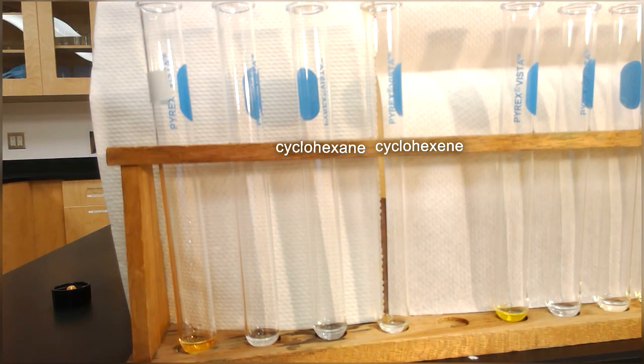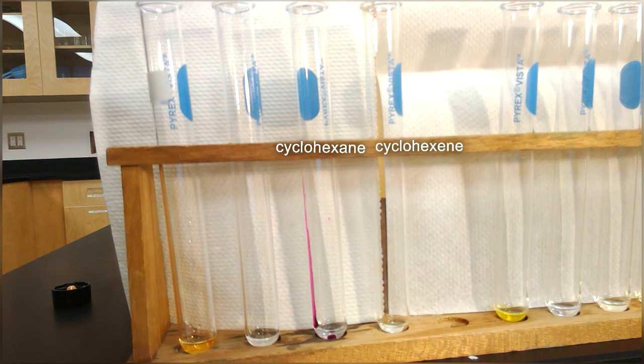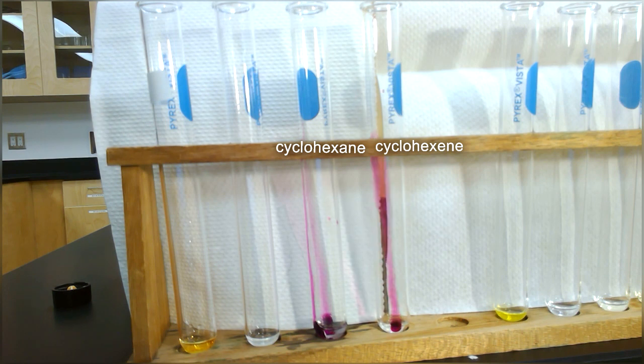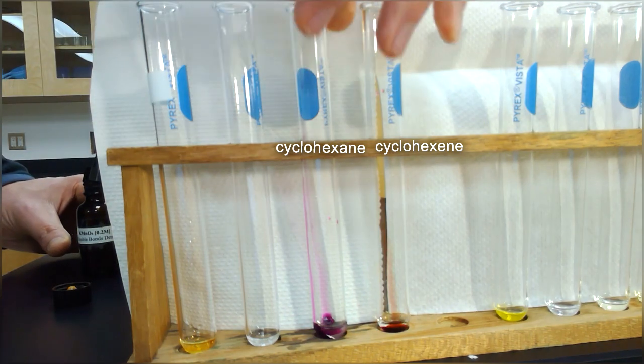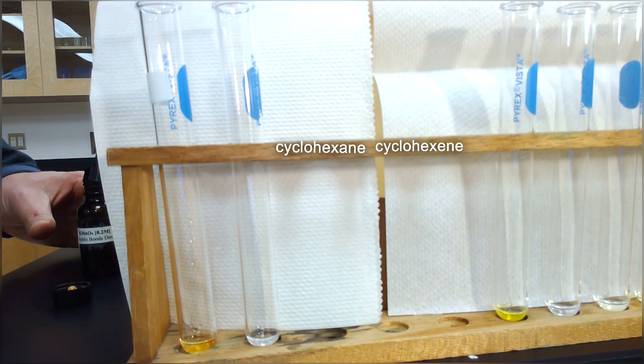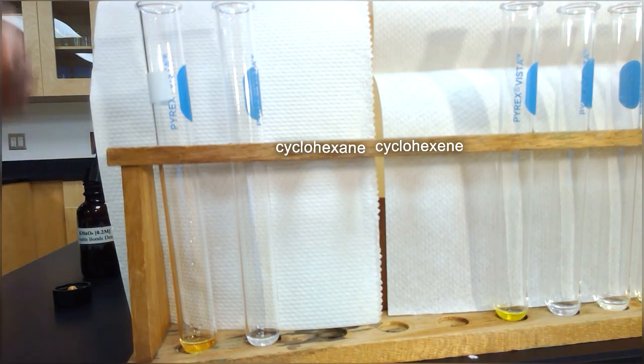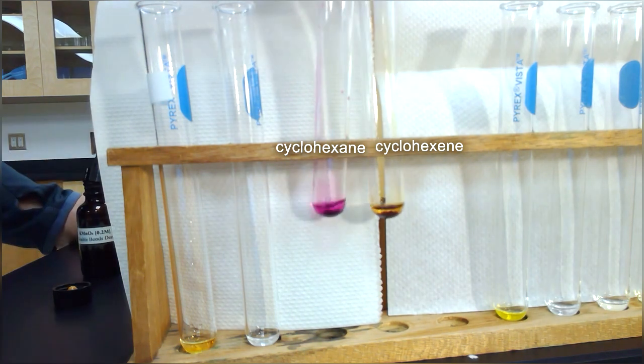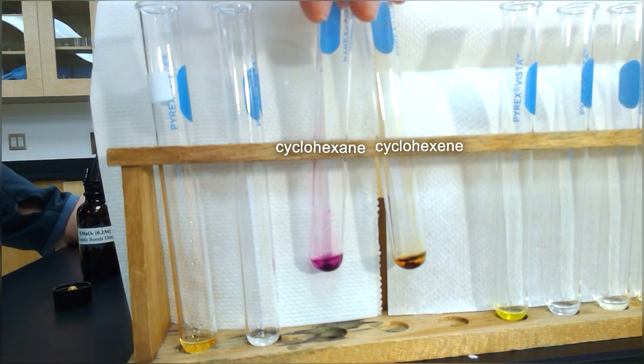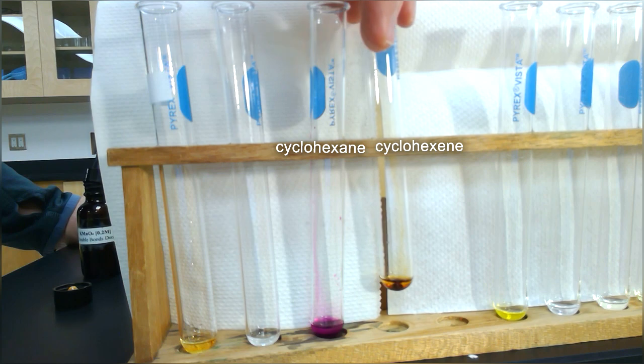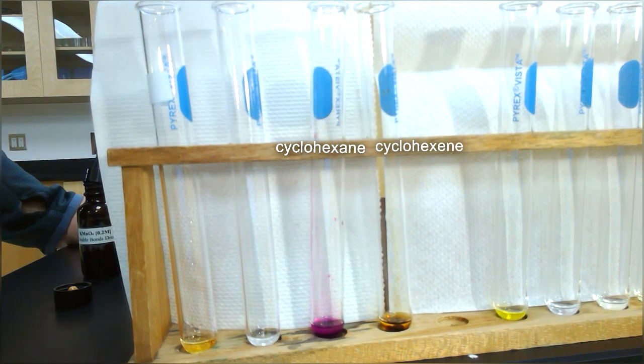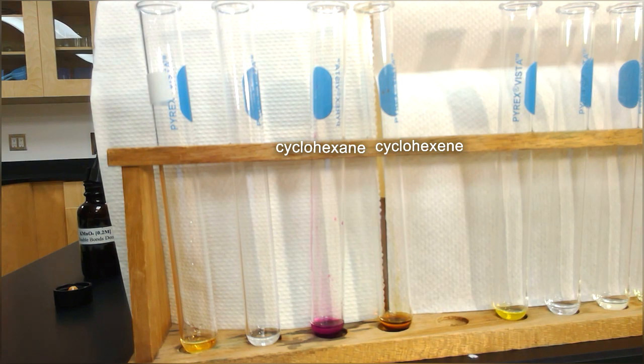So again, over here I have cyclohexane, where I'll add a few drops of potassium permanganate in there, and then the next one is cyclohexene, doing the same thing, and we'll quickly shake those up. And you should notice that there is a distinct color difference between these. The purple color is again because the molecule does not have any double bonds in there, and therefore the cyclohexane cannot react effectively with the potassium permanganate, and the purple color persists.